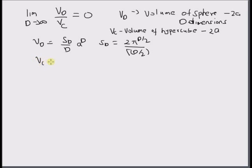And next, the volume of the hypercube is given by (2a)^d. If you remember, the volume of a cube is simply the side cubed. So for a d-dimensional hypercube, the volume is given by (2a)^d, where 2a is the side.